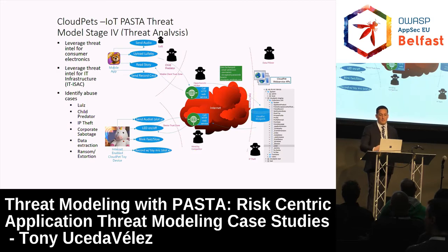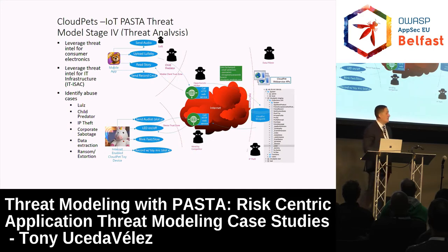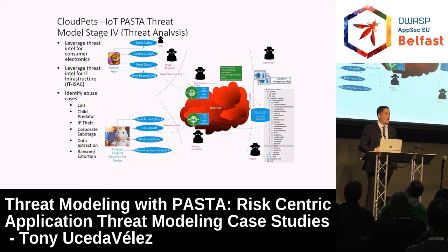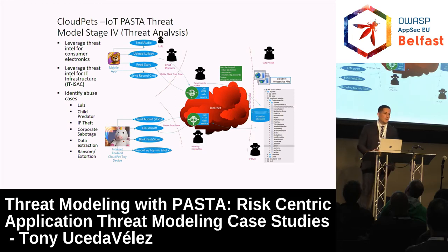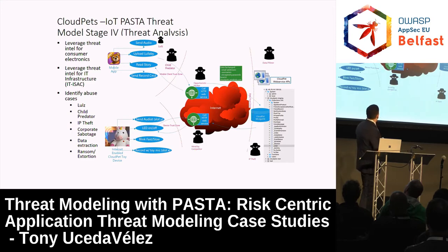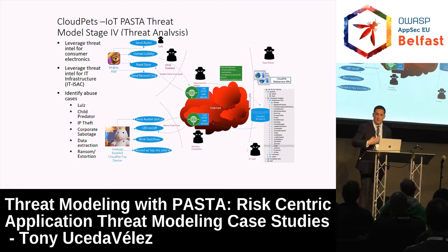Moving on quickly to Stage 4, we have to be able to substantiate all of the different malicious actions these actors could do against our overall model, and we have to have some level of rationale for this. Why would someone want to get PII for this type of consumer electronic device, or would they just do it for the lulz? We begin to brainstorm a library of different threats and threat actors that we can build against our application model — a living library that evolves time and time again as the application evolves.